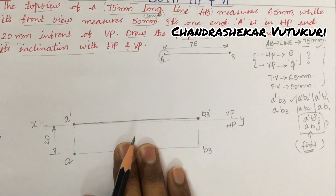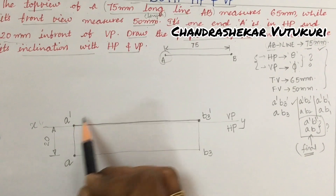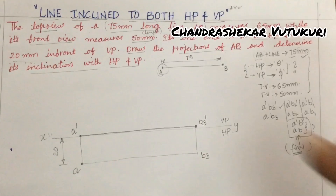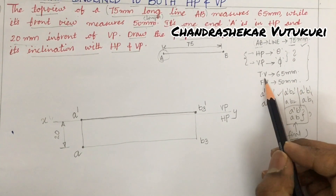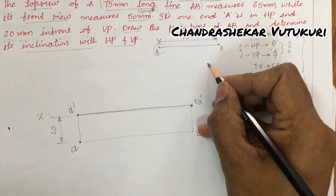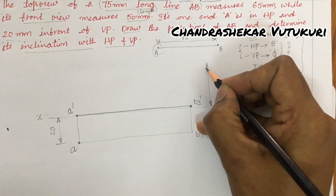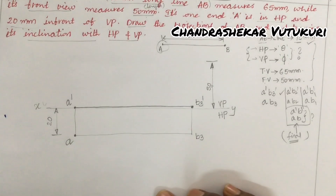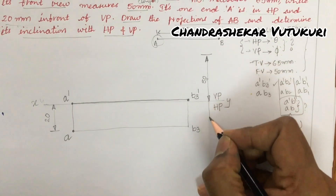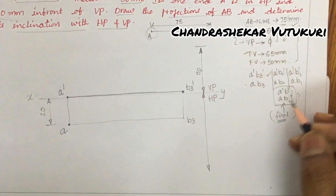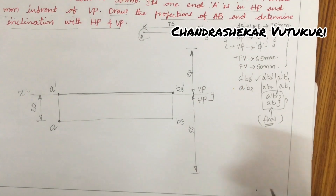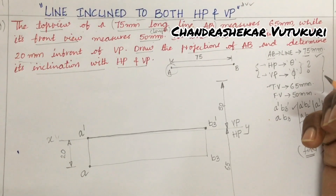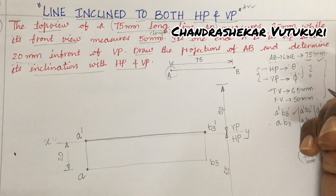Now let us look into the question. If an angle is given, you would place a protractor here and measure 30 degrees or 60 degrees, then tilt it. But here the top view and the front view distances are given, so we need to come in the reverse order. The front view will always be with respect to the vertical plane — this distance is given as 50 mm. The top view will be in the horizontal plane — that distance is given as 65 mm. If you go through my channel, I have done a problem on a line inclined to both planes with theta and phi of 30 and 45 degrees, which will help you understand this approach.